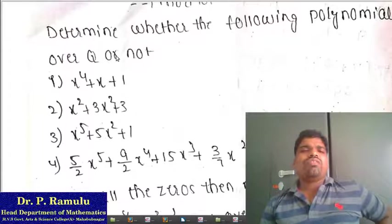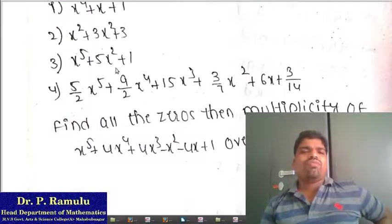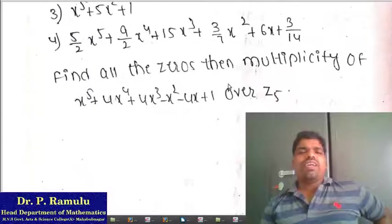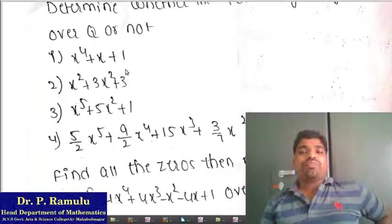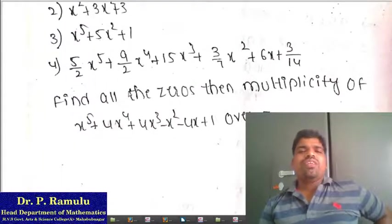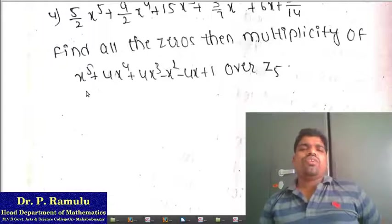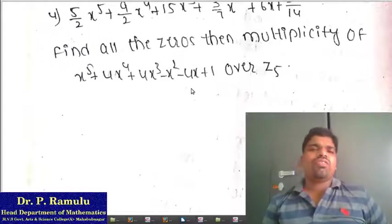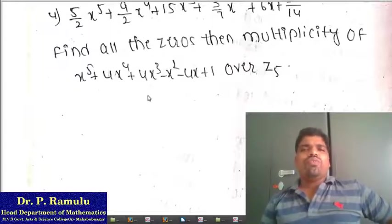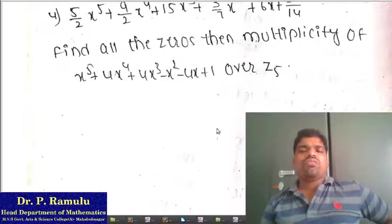Homework: Determine whether the following polynomials over Q are irreducible or not — x⁴ + 1, x⁴ + 3, x⁴ + 3x² + 5x + 1. Find all zeros and multiplicities in Z₅ — substitute 0, 1, 2, 3, 4 and check if zeros exist. This concludes Unit 4 on polynomial rings, ring homomorphisms, and ideals. Thank you for watching.